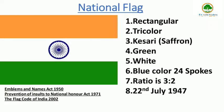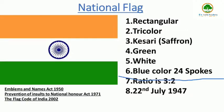The National Flag of India is a horizontal rectangular tricolor of India saffron, white and India green, centered with the Ashoka Chakra, a 24-spoke wheel, in navy blue at its center. Its length and width ratio is 3 to 2.